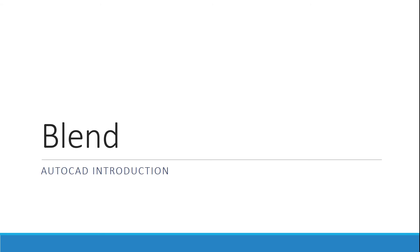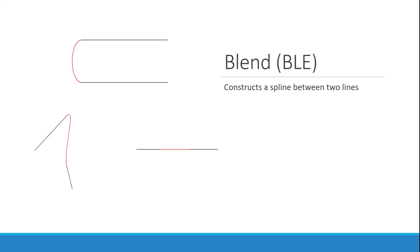The blend command is one I don't use a lot, but what it does is — if you have two lines — it'll construct a spline in between them. So for example, my two lines are going to be the objects I create, and it'll go ahead and blend and create a spline in between them. Even two parallel lines will have a spline created between them as well.